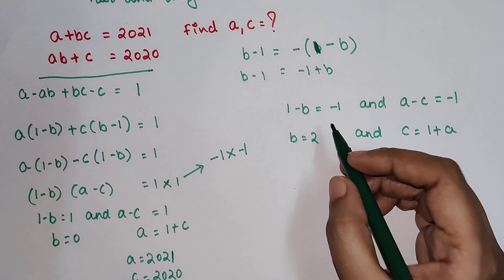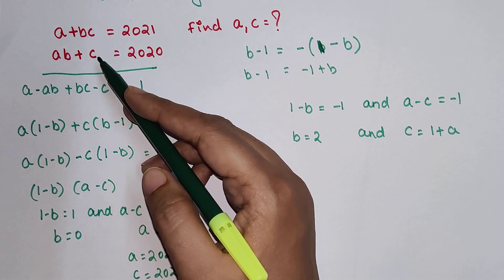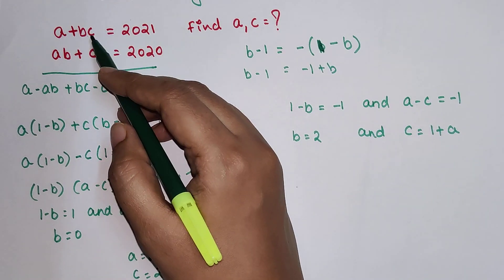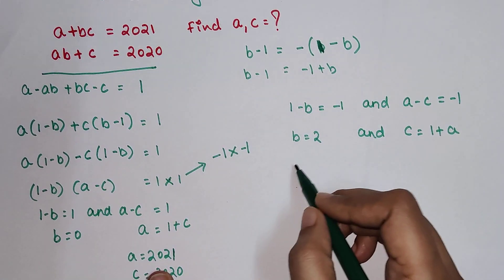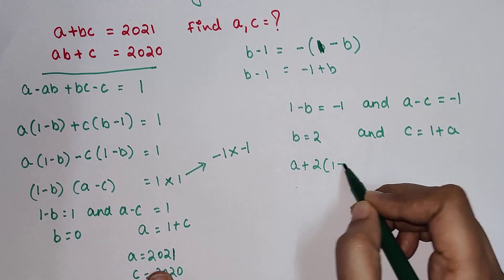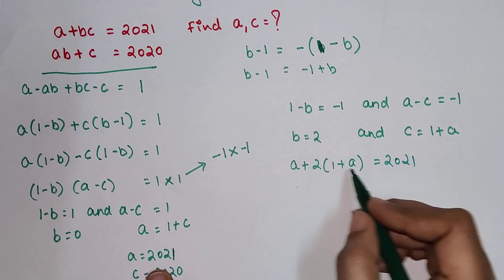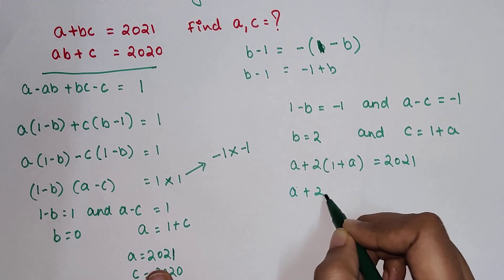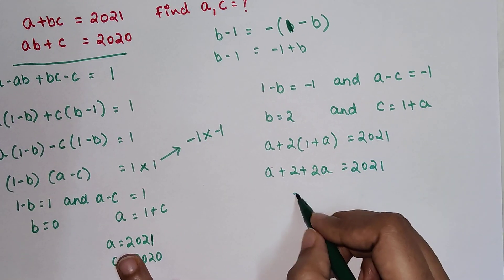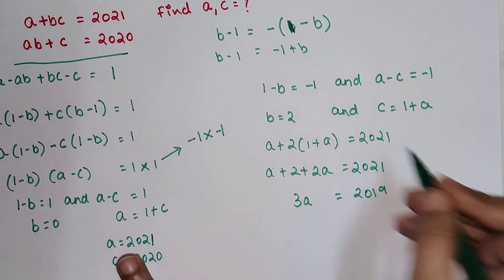Okay then if I put B equals 2 over here then what do I get? Let's put all of these values over here in the first equation. So A plus instead of B there is 2 and instead of C I will put 1 plus A equals 2021. Solving this further I have A plus 2 plus 2A equals 2021.